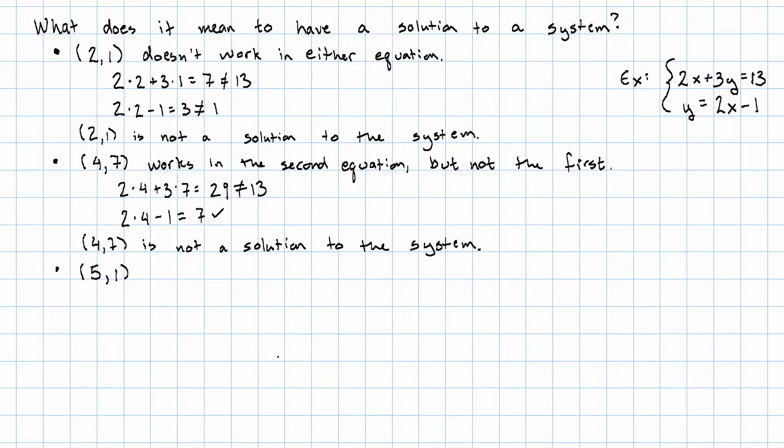What about the point 5, 1? Notice I brought a copy of the system down here so we could see it. 2 times 5, 2 times 5 plus 3 times 1 is 13. But on the other hand, 2 times 5 minus 1 is 9, which is not 1.